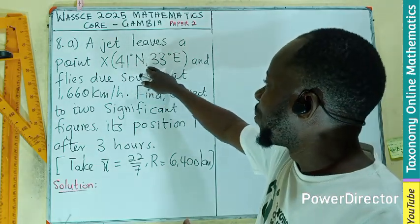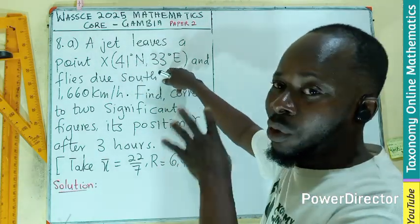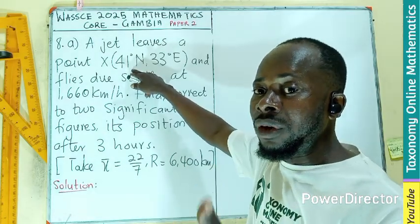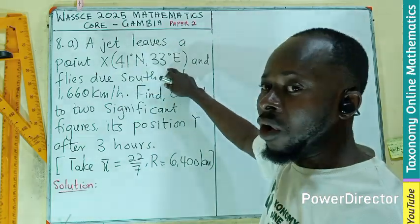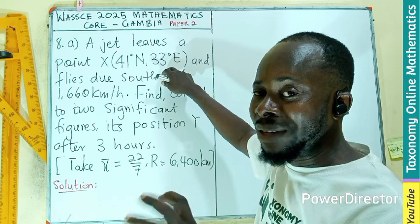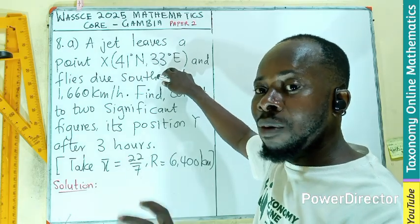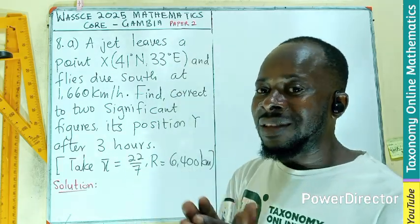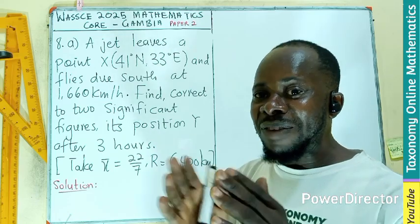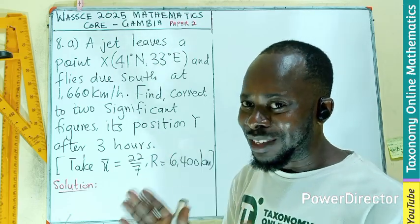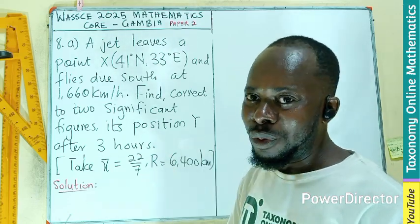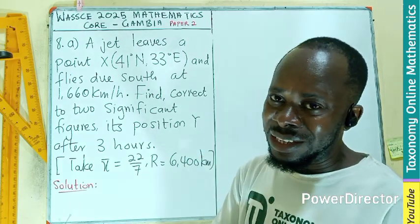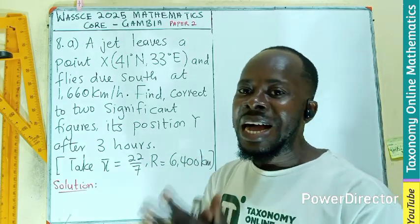Now, giving you the position as the coordinate in this form, this is your latitude on the globe and this is the longitude. If you follow my tutorial very well, you know we have a comprehensive tutorial on the Earth as a sphere, which is global mathematics. You can check that on YouTube under the playlist 'Global Mathematics into bracket The Earth as a Sphere'.